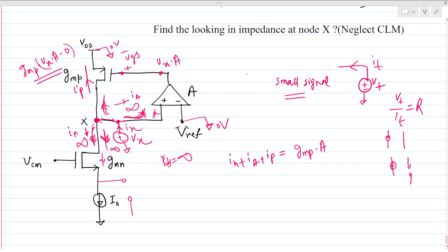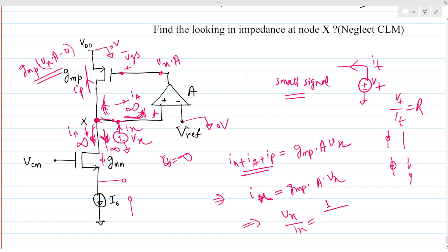So the total current Ix from the voltage source equals gmp times A times Vx. Therefore, Vx over Ix equals 1 over (A times gmp). This is our final answer — the looking-in impedance at node X is 1 over (A · gmp), where gmp is the transconductance of the PMOS.